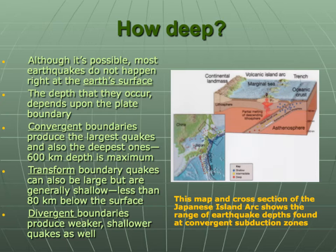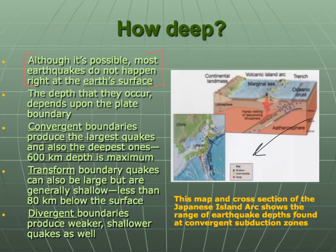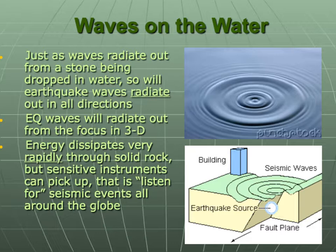How deep can earthquakes get? The depth generally is a function of the type of plate boundary. Convergent boundaries produce the largest and most destructive earthquakes, and can also produce the deepest ones because of subduction. Transform boundaries can produce large quakes, but generally they're shallow — from the surface down to about 80 kilometers, about 50 miles. Divergent plate boundaries produce weaker, shallower quakes within the upper 30 to 40 kilometers, because that's where the plates are the thinnest.